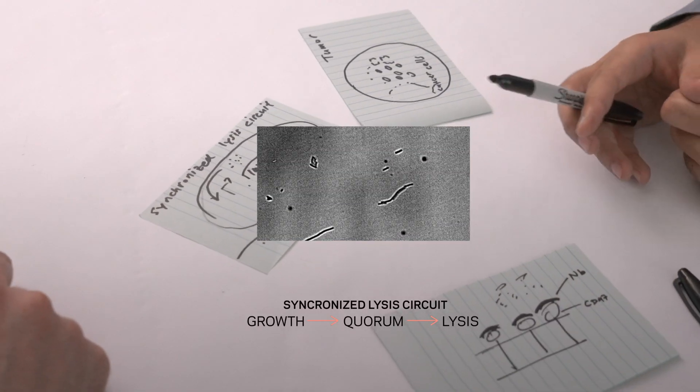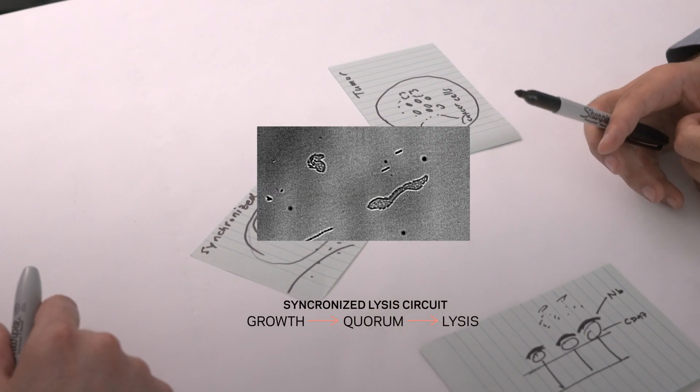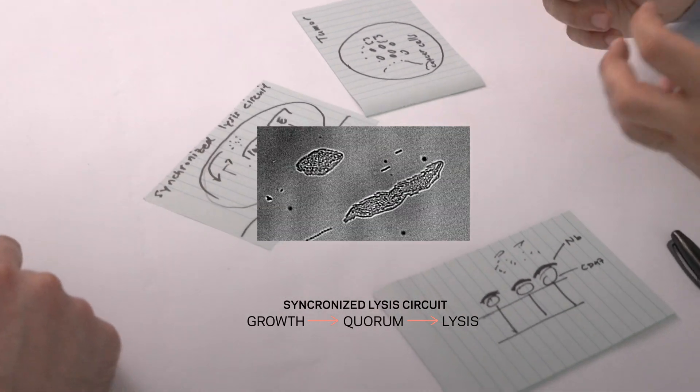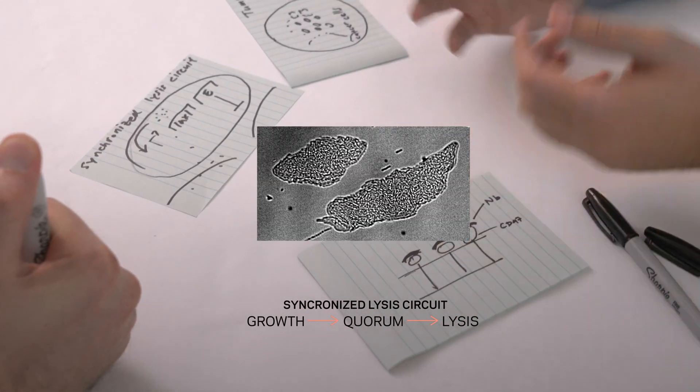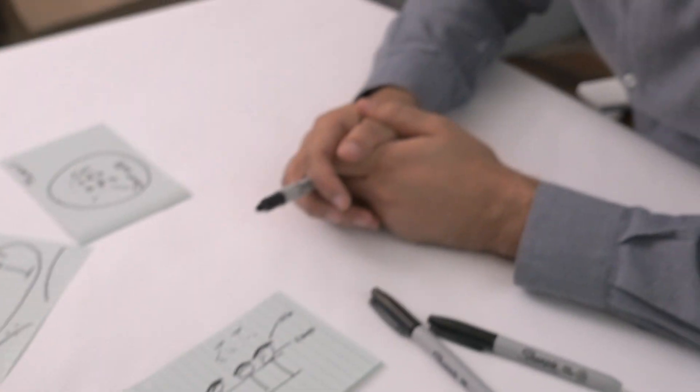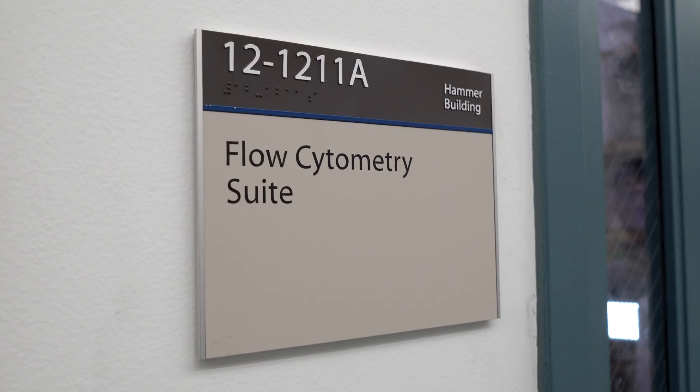There are a couple of interesting aspects about this circuit. The bacteria have to hit a critical mass, and that's when they burst open. It releases the drugs, and at the same time when they burst open, they release bacterial membrane which stimulates the immune system.